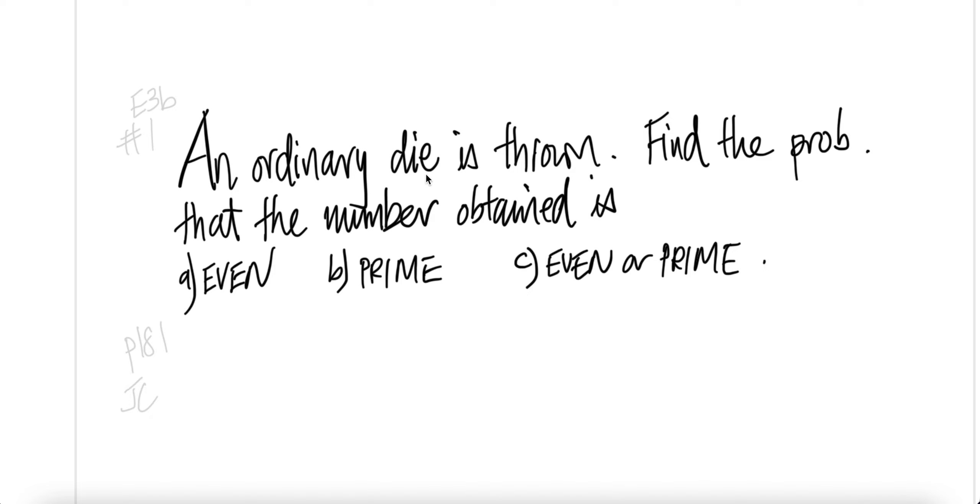An ordinary die is thrown. Find the probability that the number obtained is: part A, even; B, prime; C, even or prime.